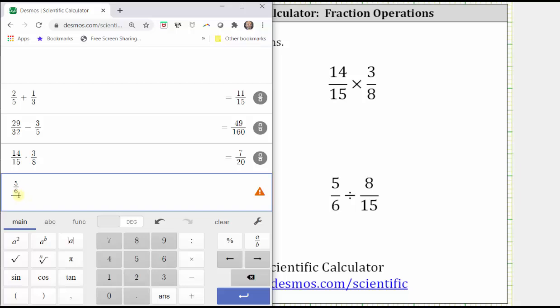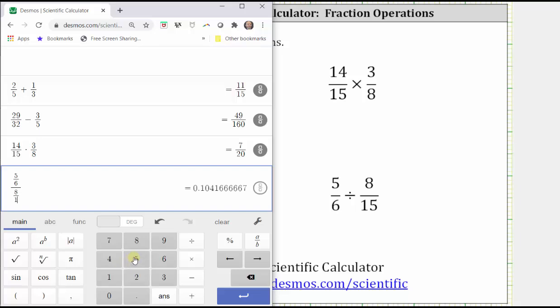Notice how it's giving us this fraction bar. It's going to be entered as a complex fraction, but that's okay because remember, a fraction bar does represent division. Now we enter eight divided by 15. Click convert to fraction. The quotient equals 25/16.